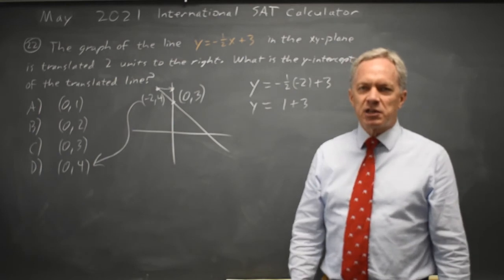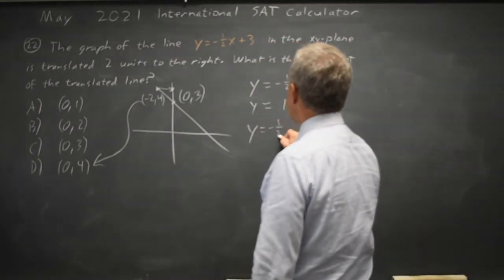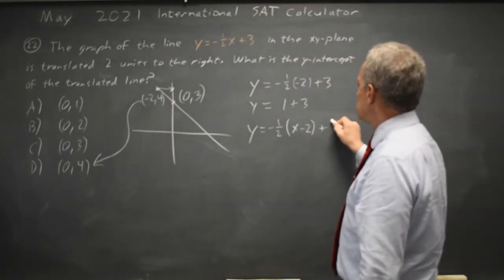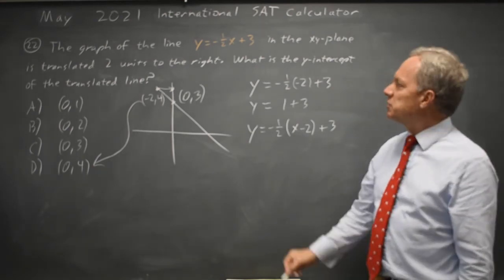Alternatively, I can write the equation for the translated line, y equals negative 1 half. If I replace x with x minus 2, that translates the graph to the right by 2, which is what they've told us to do.